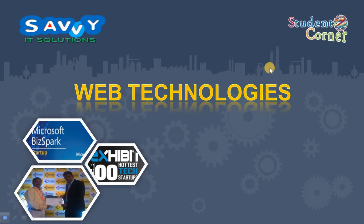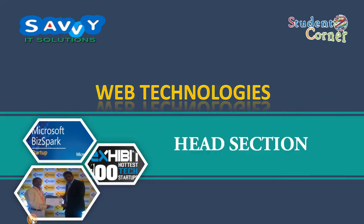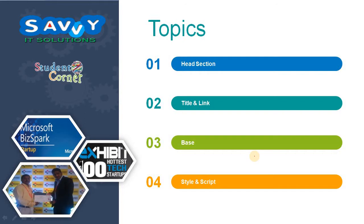Welcome to Savi IT Solutions. We are continuing with HTML videos. In the HTML structure, the document type was completed in the previous video. Now we are covering the head section. In the head section, 6 tags are available: title, link, base, style, script, and meta. The first 5 tags are learned in this presentation, and in the next presentation we are learning the meta tag.